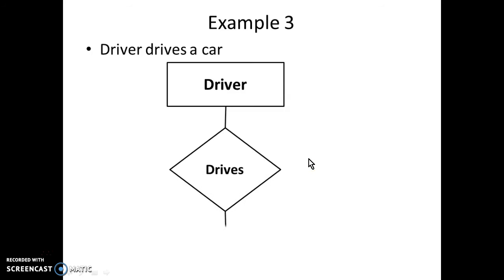Here, we can say, obviously one driver will be driving a single car at a single time. At the same time, one driver cannot drive multiple cars. So, yes, it may be possible that driver may be allowed to drive more than one car but not at the same time. Obviously, that is not possible. So, we will give the cardinality as one. One driver drives one particular car at the same time.